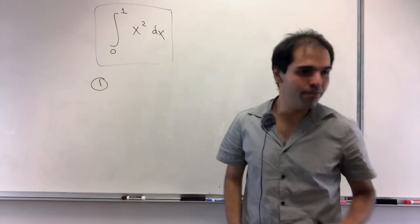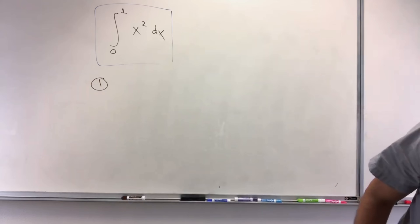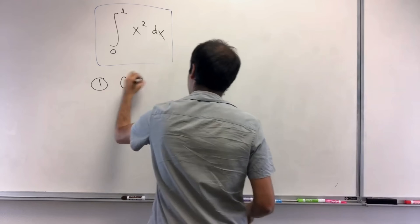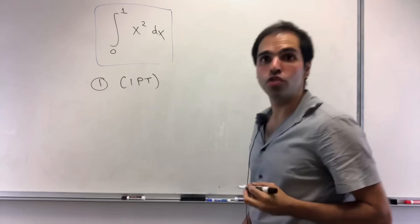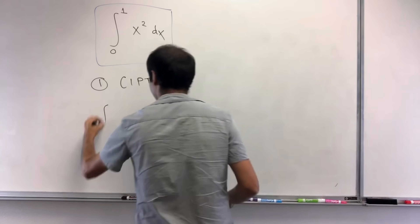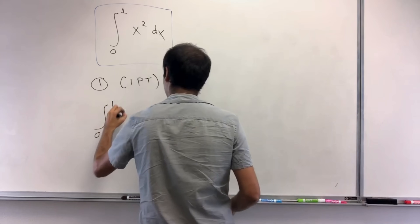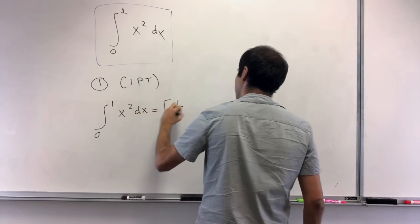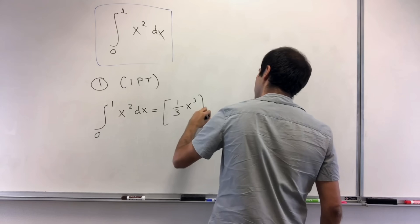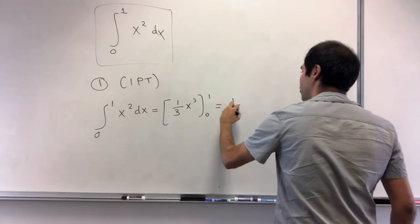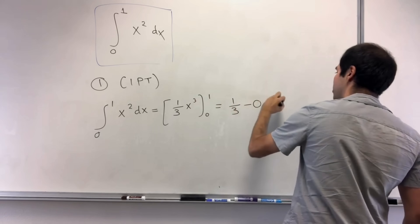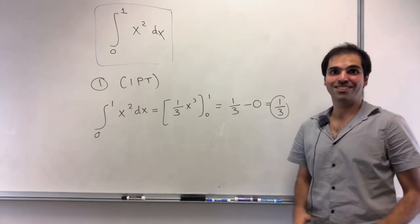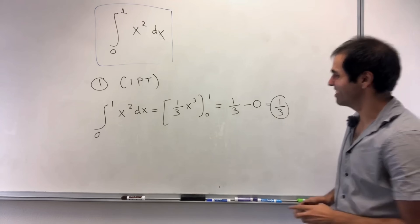High school — imagine this was an exam out of ten points, it would be worth one point. In that case you would just use the fundamental theorem of calculus. The integral from zero to one of x squared dx: an antiderivative is one-third x cubed from zero to one, which would be one-third minus zero, which is one-third. Great, but let's move on to more interesting stuff.